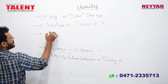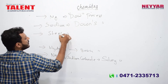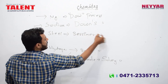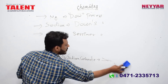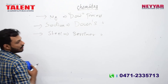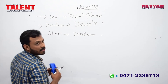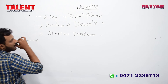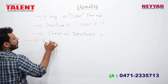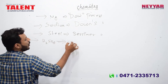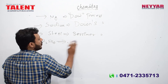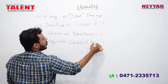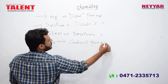Steel making process uses the Bessemer process. Sulfuric acid is made by the Contact process.